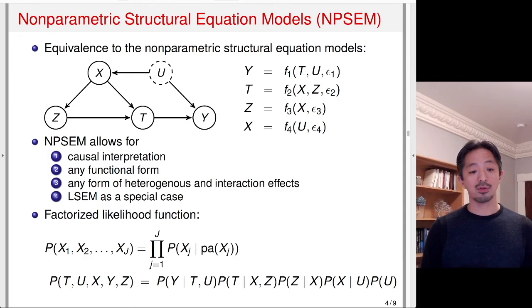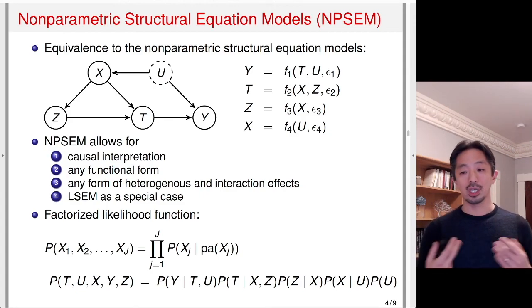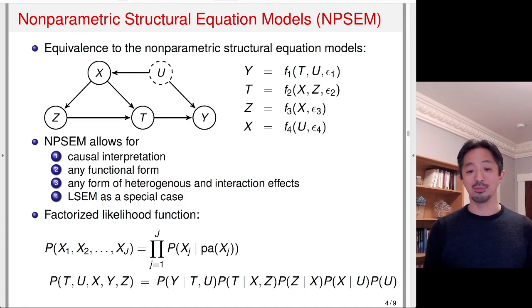In this current example, we can factorize the joint distribution T, U, X, Y, Z into Y given T and U, which is basically the parent of Y is T and U, and T given X and Z. So the parent of T is X and Z, and distribution of Z given X because the parent of Z is X, and then distribution of X given U because the parent of X is U, and then finally the distribution of U, which doesn't have any parent. The joint distribution can be factorized into this nice form following a very simple rule. You can read it off from the graph itself.